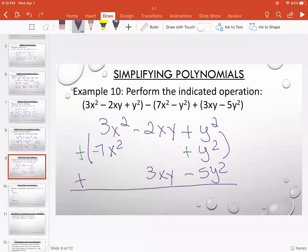And now I combine. 3 plus a negative 7 is negative 4x squared. Negative 2 plus 3 is 1xy. 1 plus 1 is 2, minus 5 is a negative 3y squared.